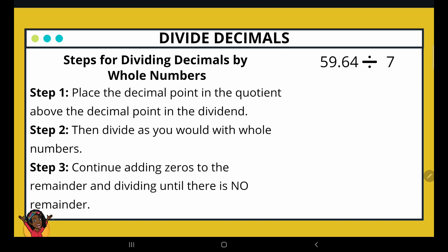Let's take a look at our steps for dividing decimals by whole number. So step 1 says place the decimal point in the quotient above the decimal point in the dividend. Step 2, then divide as you would with whole numbers. Step 3, continue adding zeros to the remainder and dividing until there is no remainder left.